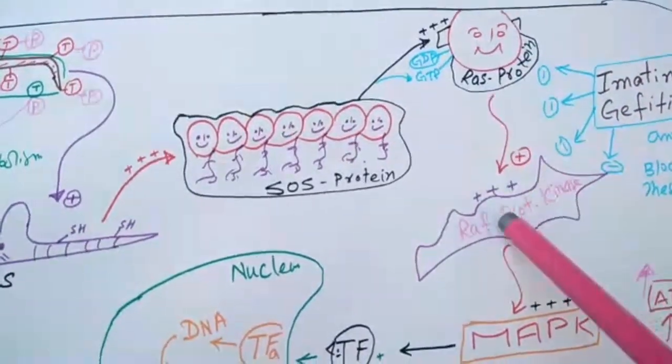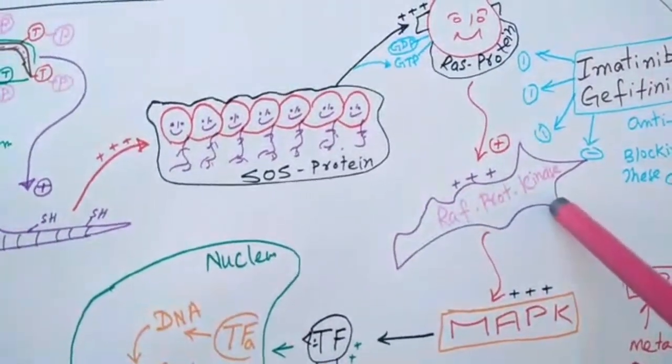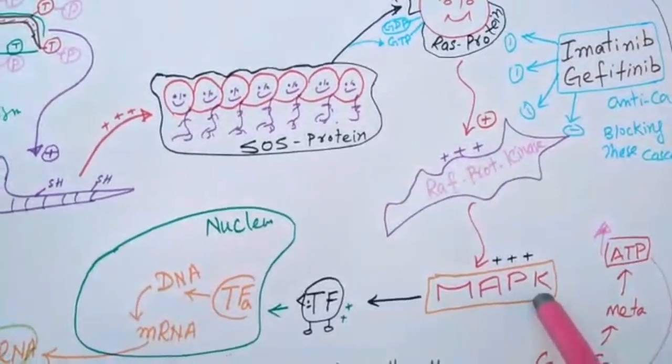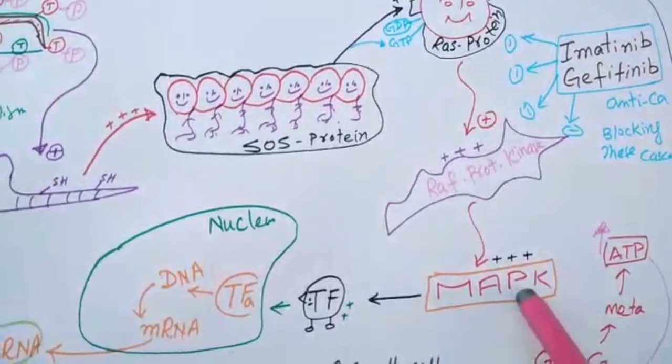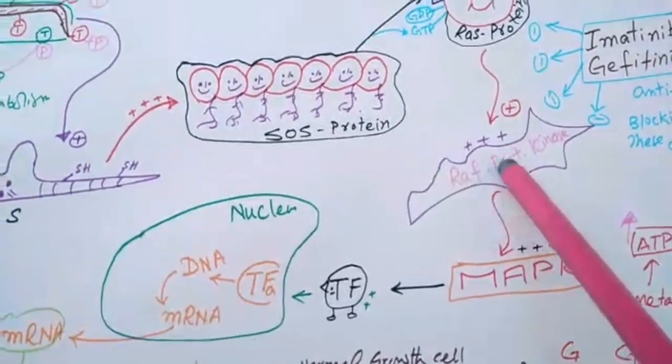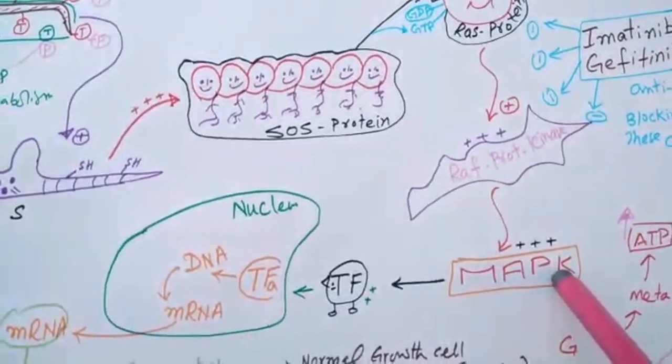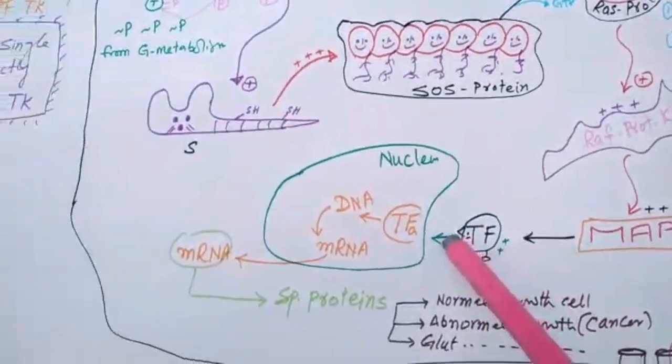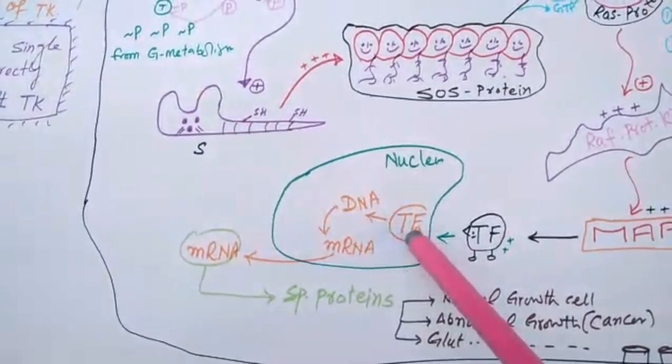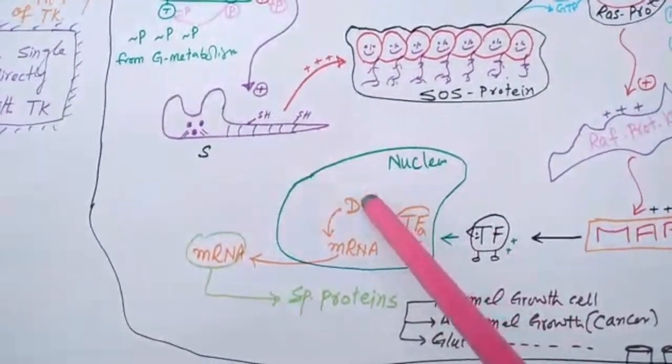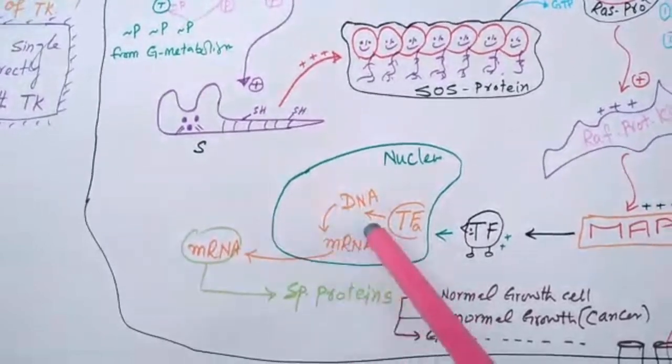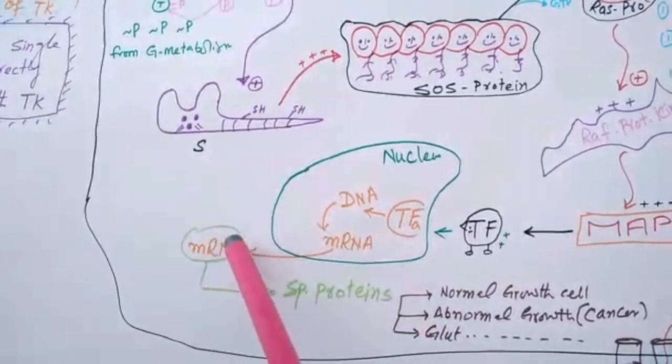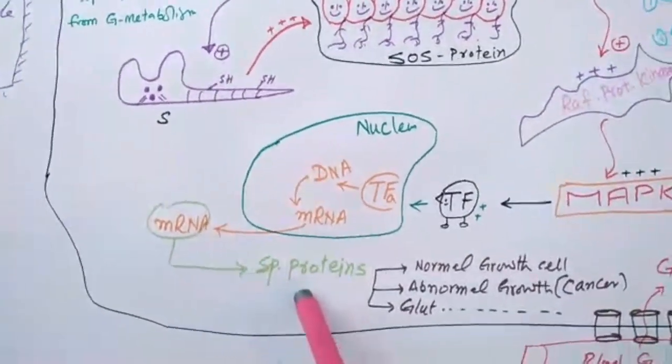This Ras protein will stimulate Raph protein kinase, and this Raph protein kinase will stimulate MAPK, mitogen-activating protein kinase. This MAPK will stimulate transcriptional factor. Activated transcriptional factor will internalize in the nucleus, interact with DNA, resulting in special mRNA into the cytoplasm, and in the cytoplasm they result in special proteins.